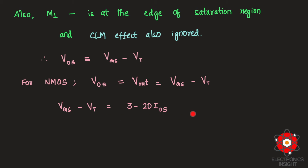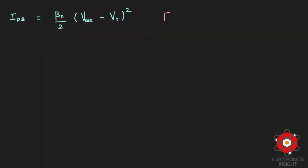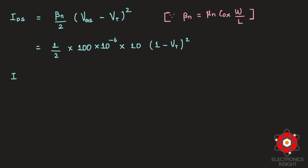We also know that for an NMOS in saturation, IDS = (βN / 2)·(VGS − VT)², where the process transconductance parameter βN = μnCox·(W/L). Substituting the given values, IDS = (100/2)·10 × 10⁻⁶ A/V² · (VGS − VT)², which in milliamps becomes IDS = 0.5·(1 − VT)².